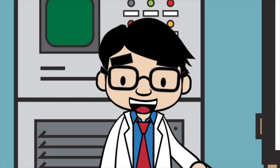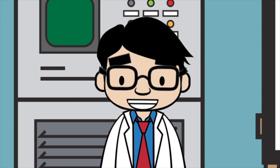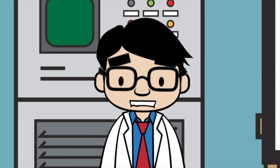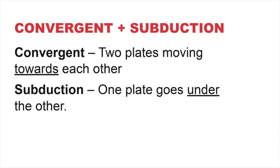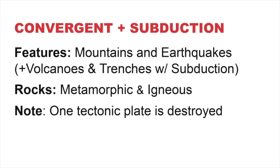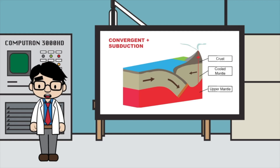Plate boundaries can be divided into three types: convergent with subduction, divergent, and transform boundaries. Convergent means two plates are moving towards each other, while subduction means that one plate goes under the other. Convergent boundaries feature mountains and earthquakes, and volcanoes and trenches when there's subduction. Metamorphic and igneous rocks form here. When there's subduction, one tectonic plate is being destroyed.